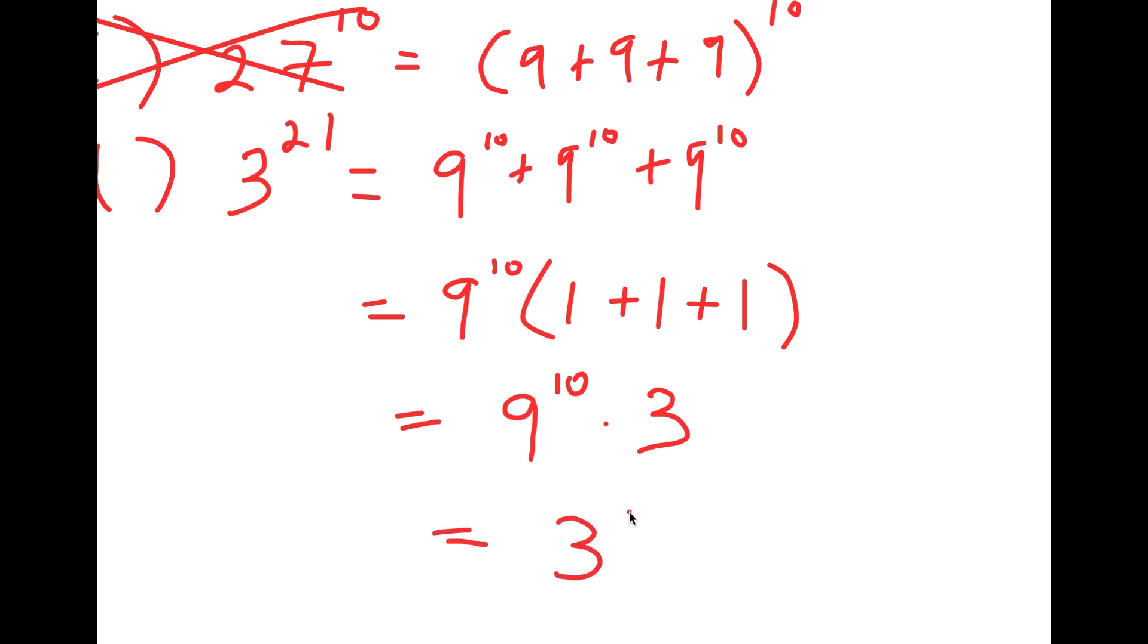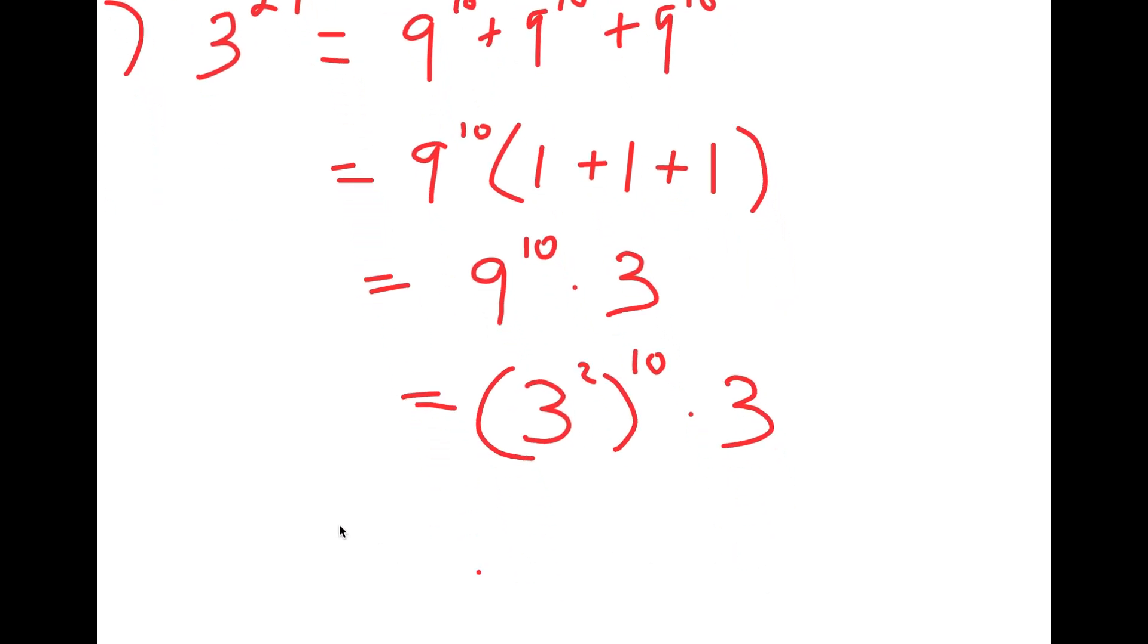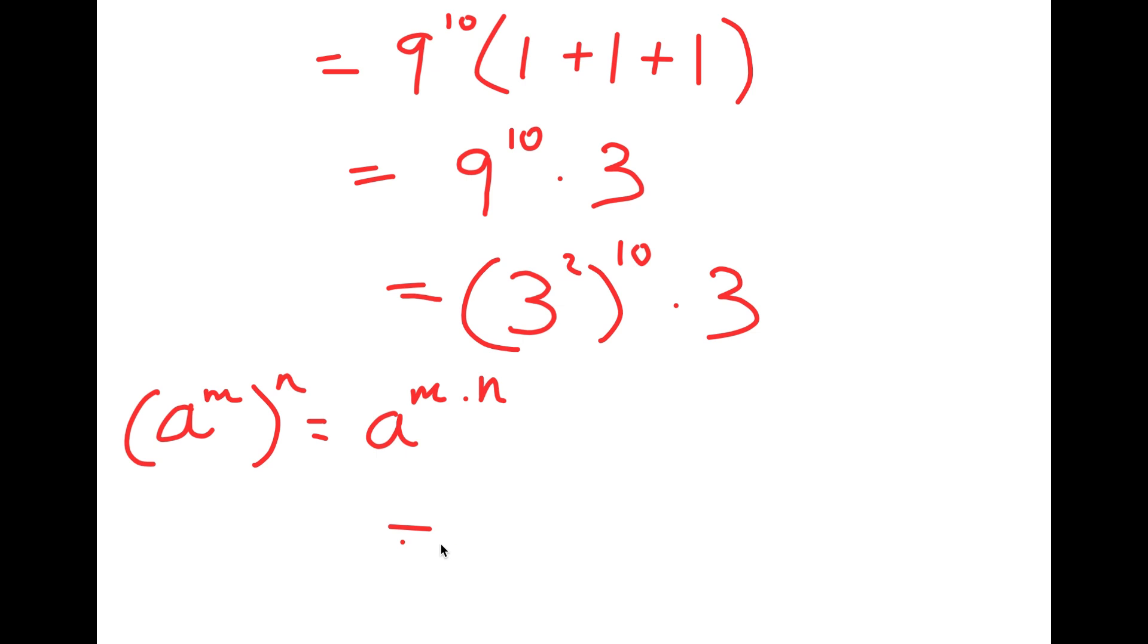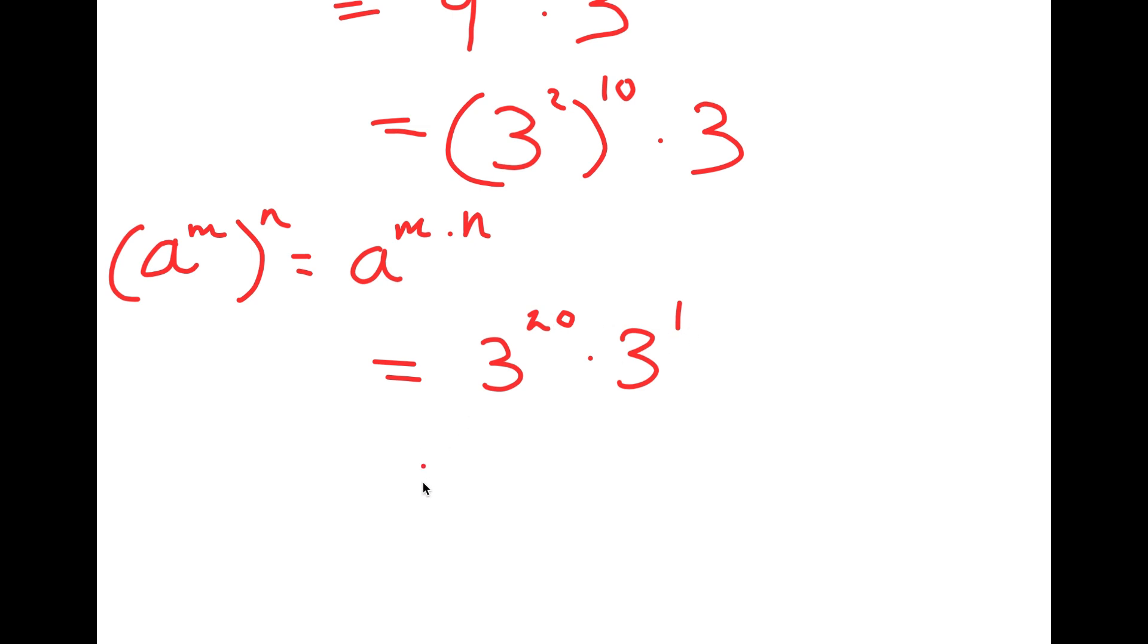And now this is equal to 3 squared to the power of 10 times 3. And if I have something in the form a to the power of m to the power of n, this is equal to a to the power of m times n. So 3 to the power of 2 to the power of 10 is going to equal 3 to the power of 20. And I have this times 3 to the power of 1. So I simply just add the exponents. This is equal to 3 to the power of 21.